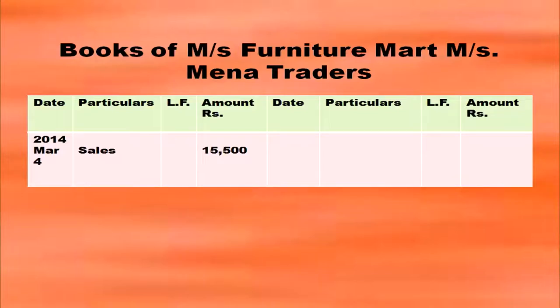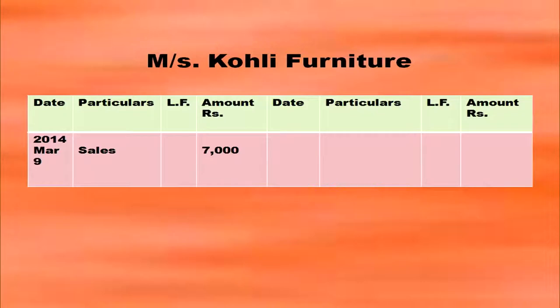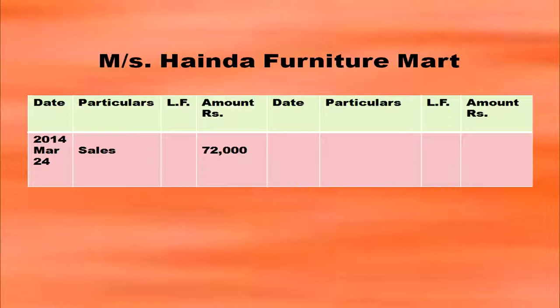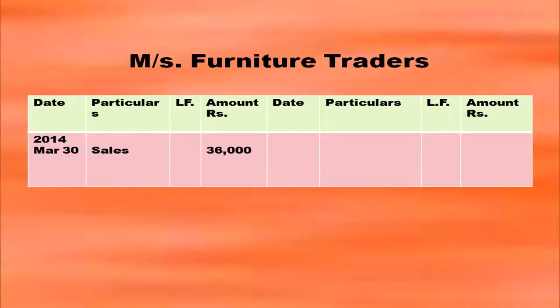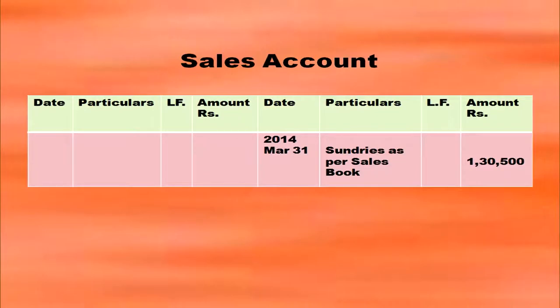Each debtor's account has date, particulars, ledger folio, and amount on both debit and credit sides. On the debit side of each debtor's account, write 'To Sales Account' in the particulars column with the date and amount. In the sales account, on the credit side, write 'By Sundries as per Sales Book' in the particulars column. The total sales of Rs. 1,30,500 will appear in the amount column of the sales account.